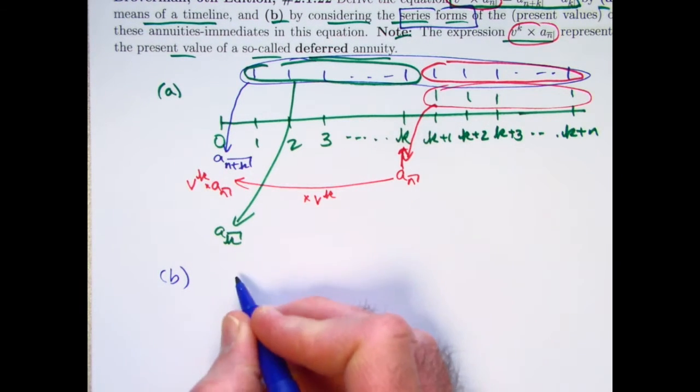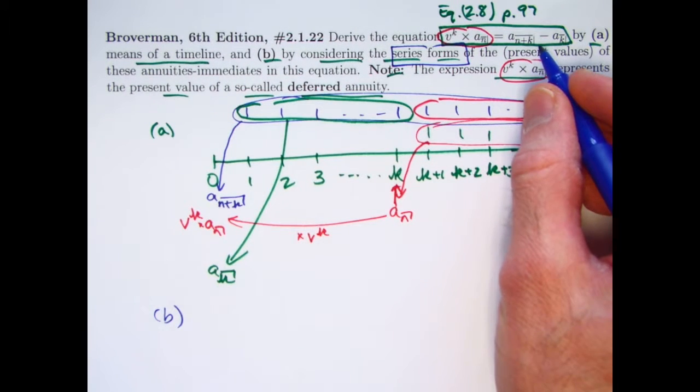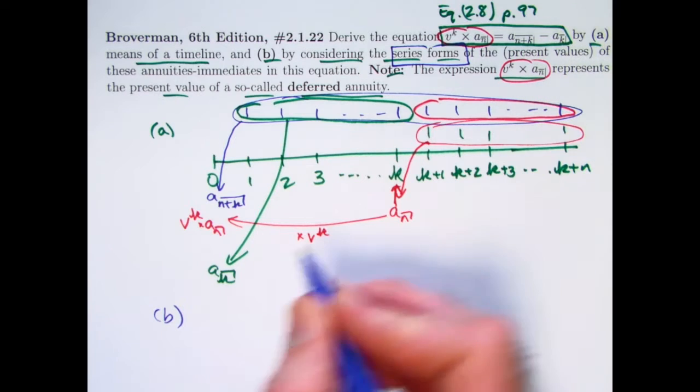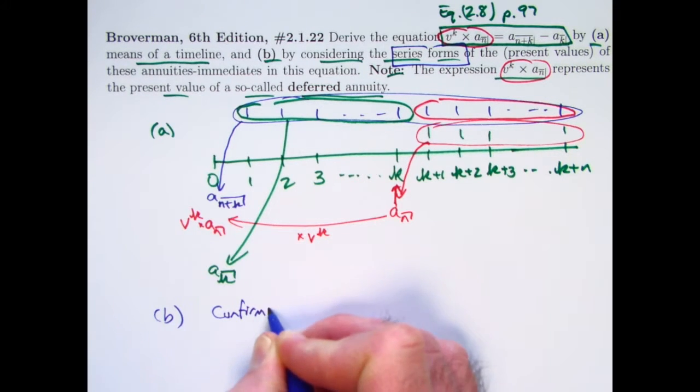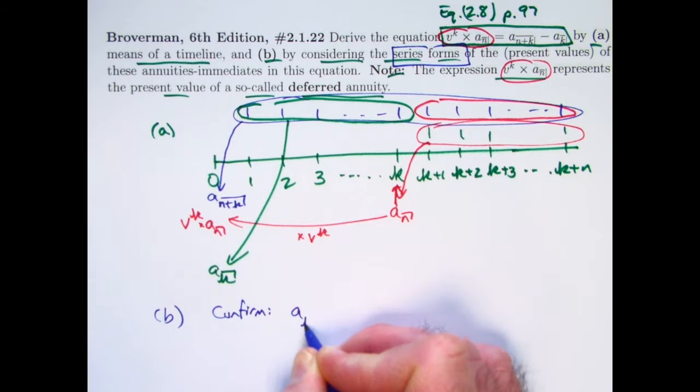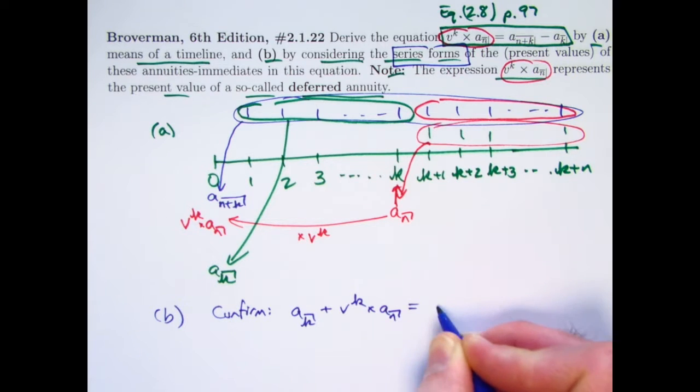That would be an algebraic confirmation of the intuition that we get from thinking about it with the timeline. I'm going to confirm this equality up here in terms of a sum. I'm going to add A_K to both sides. Let's confirm algebraically that A_K plus V to the K times A_N equals A_(N+K).